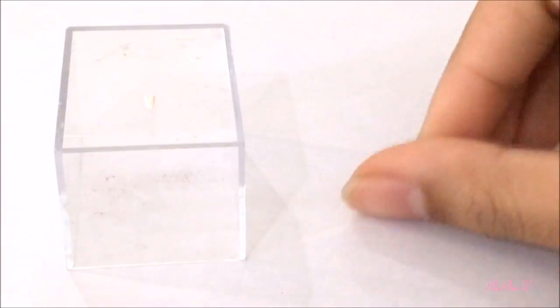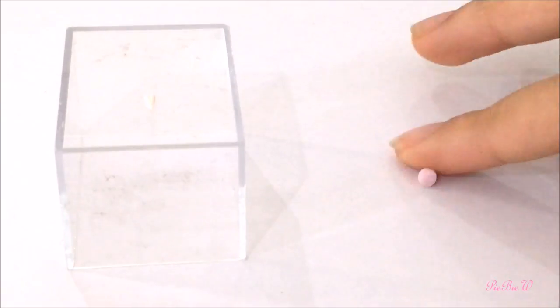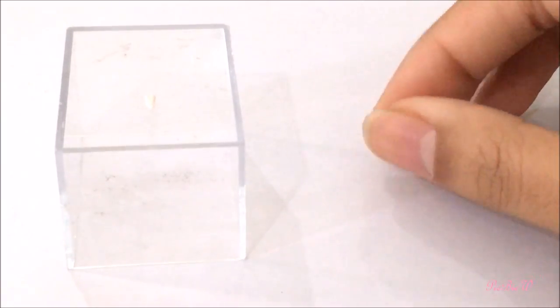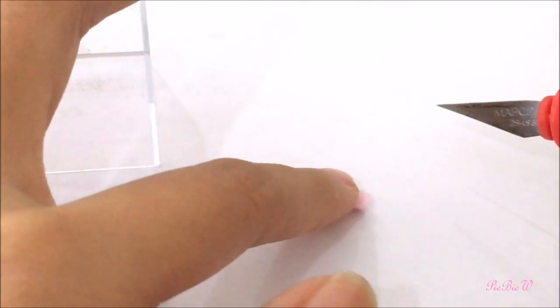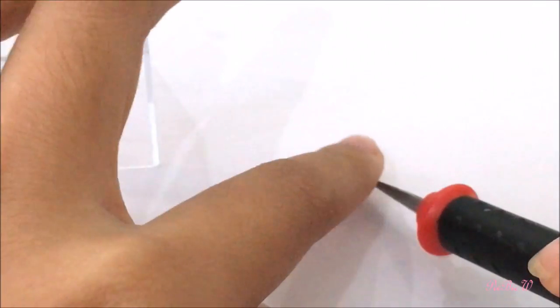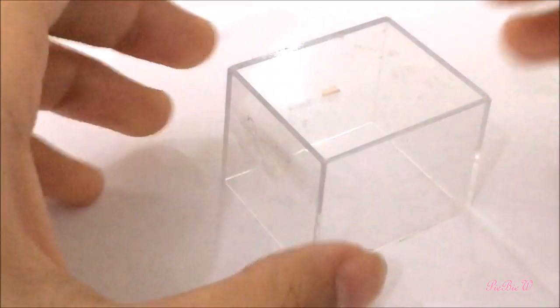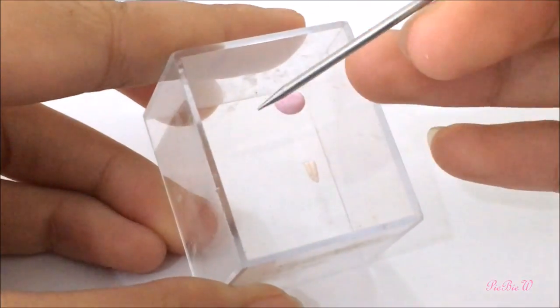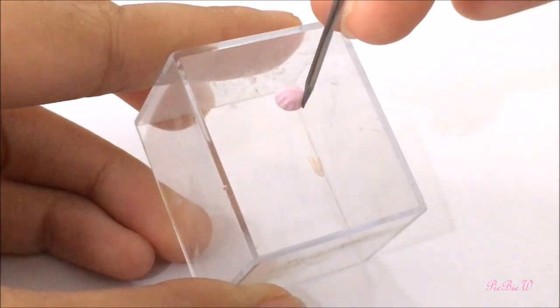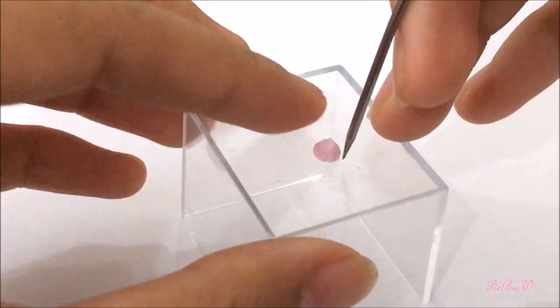And now to make the skirt, take out some pink clay, shape it into a cone and cut off the pointy part. Afterwards, using your needle tool, indent some lines to make it look like a ballerina skirt. Sort of like a cupcake base.